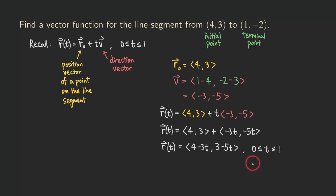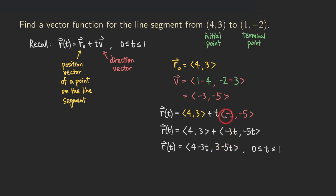Let's do a quick check. Plugging t = 0 into r(t) = (4 - 3t, 3 - 5t) gives us (4, 3), which is our initial point. Then when t = 1, we get 4 - 3 = 1 and 3 - 5 = -2, which gives us the terminal point (1, -2). That confirms our vector function for the line segment is correct, with 0 ≤ t ≤ 1.